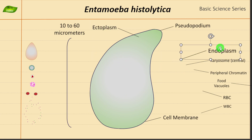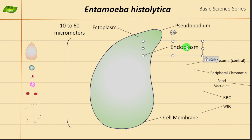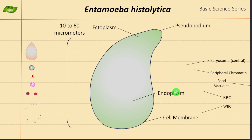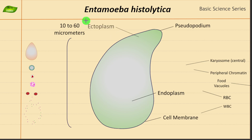Endoplasm is the region close to the central area. I can put the endoplasm label a little bit closer to the central area. So right now we have discussed the outermost layer — the plasma membrane — and cytoplasm, the matrix inside that region. Endoplasm is the inner, more fluid-like region of the organism, located closer to the central nucleus. It contains various organelles and food vacuoles.